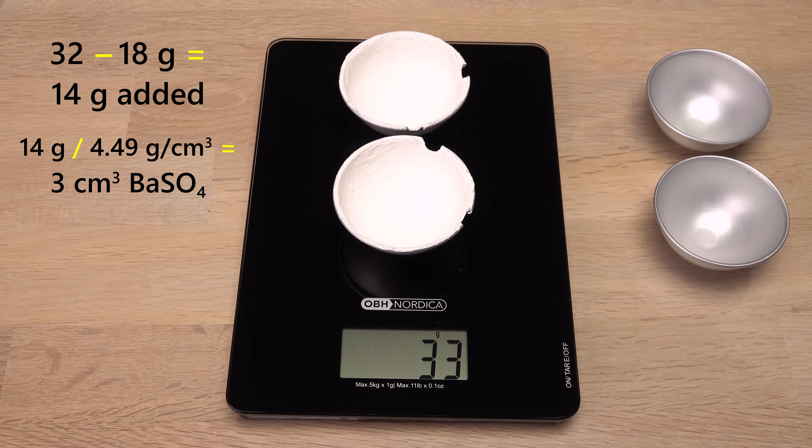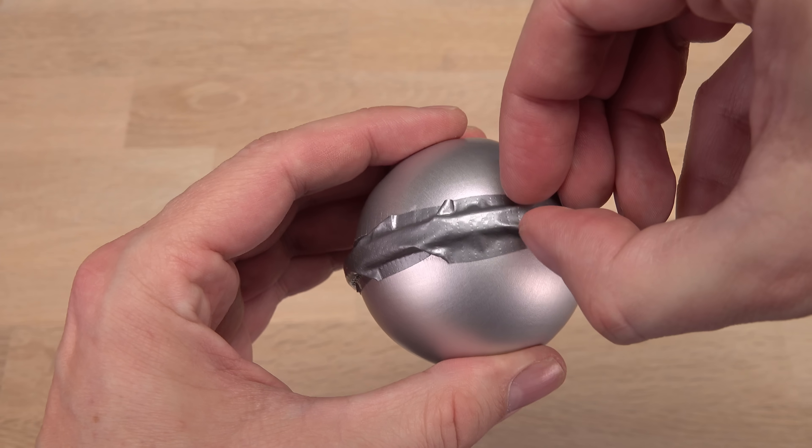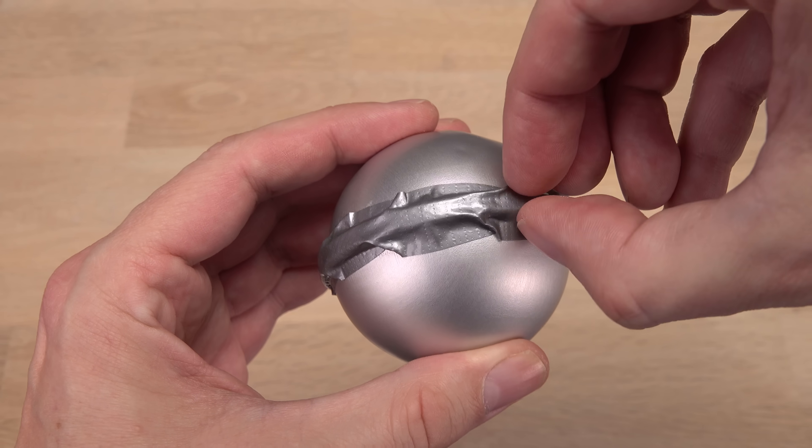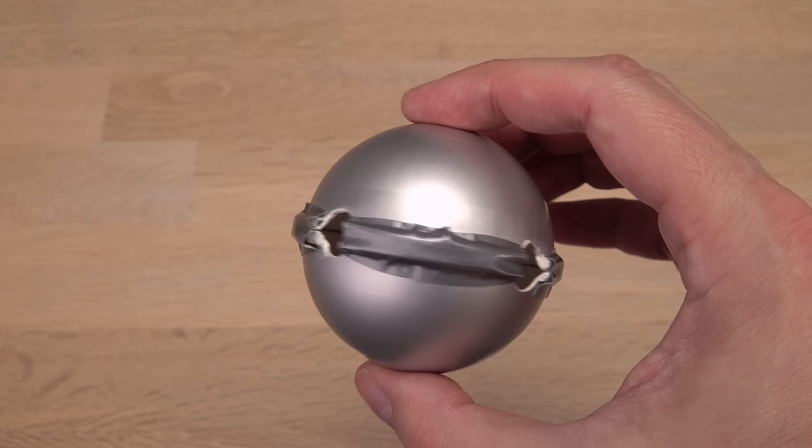It's quite a thick layer, around 14 grams. After adding some gaffer tape to make the joints not only dough-tight but light-tight, the sphere is ready for testing.